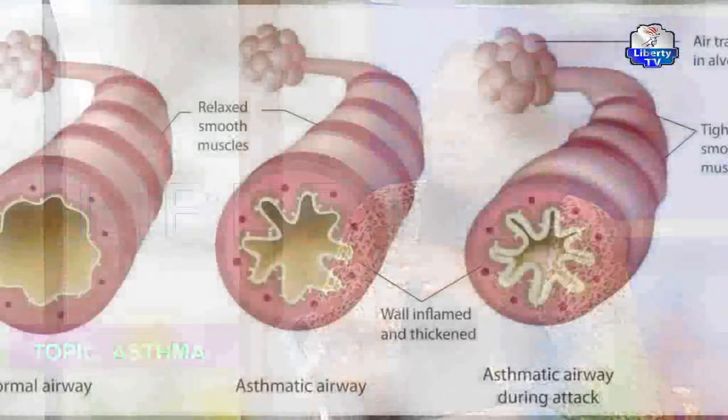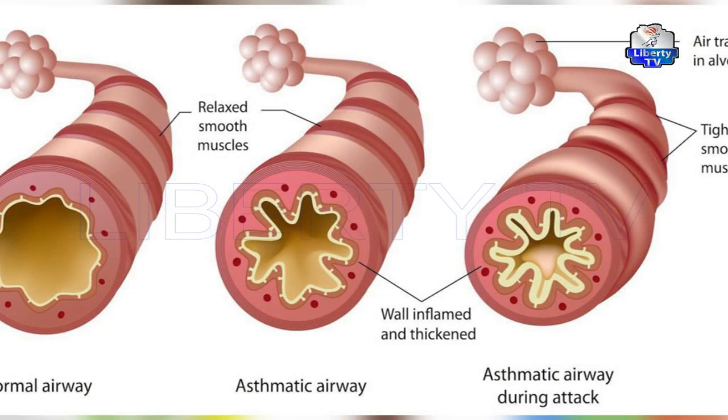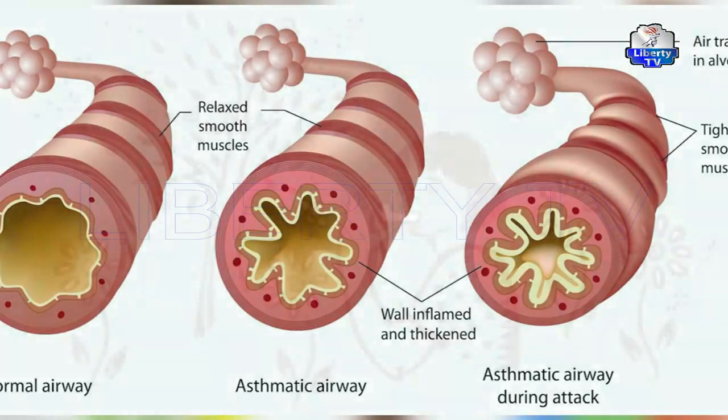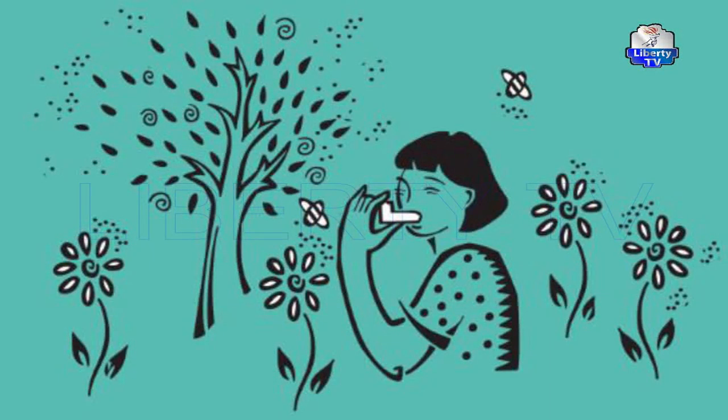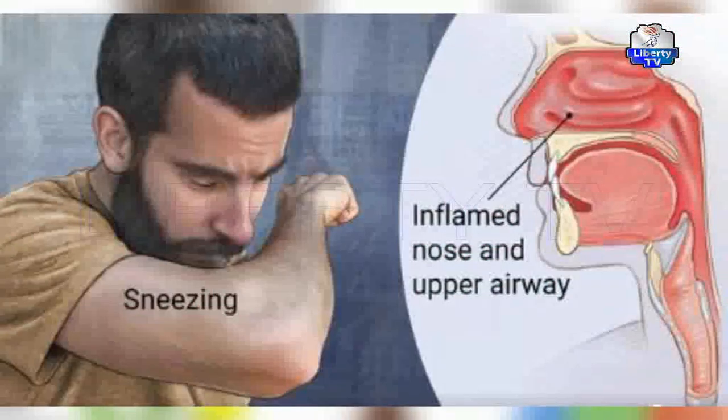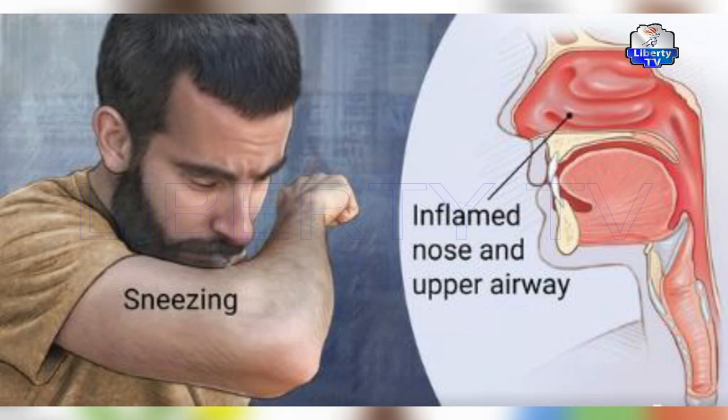In terms of prevention, since asthma has both genetic and environmental components, we cannot definitively prevent it in those who don't have it. What we can do is slow down the progression in those who are diagnosed. We advise them to avoid their triggers, take their medications, and maintain a good relationship with their doctor — compliance is one of the most difficult challenges in managing asthma patients.